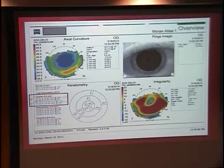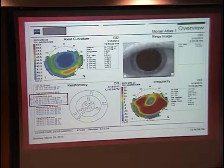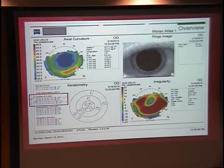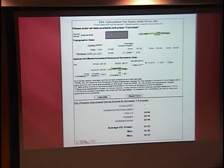The IOL master is measuring the central three to three-and-a-half millimeters at 12 points. The Lensstar measures at 21 points and out to 4.5 millimeters. In the post-refractive surgery cornea, the IOL master is essentially useless for keratometry reading — it's great for axial length, but essentially useless for keratometry. And for that matter, the topography numbers alone can't be relied upon either.